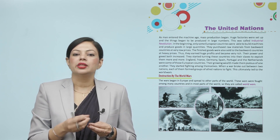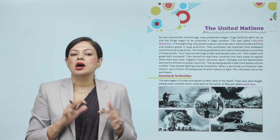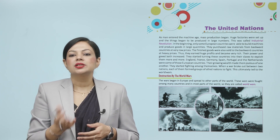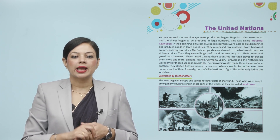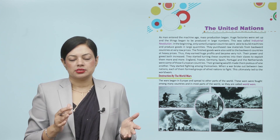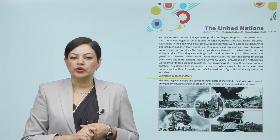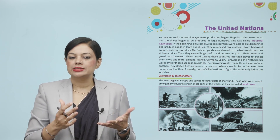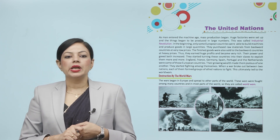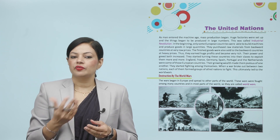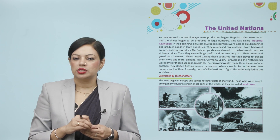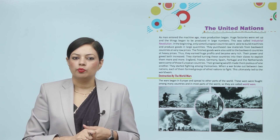Only a few European countries were successful in building large machines and producing huge quantities of goods. They purchased raw materials from backward countries at very low prices and sold finished goods back to those countries at heavy prices. Thus, they earned huge profits, became very rich, and their power and greed both increased. They started turning these countries into their slaves to exploit them more and more.